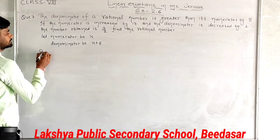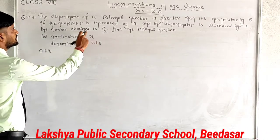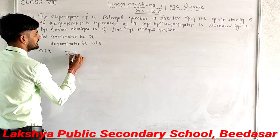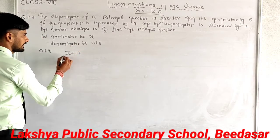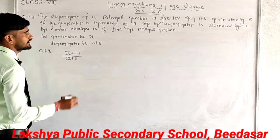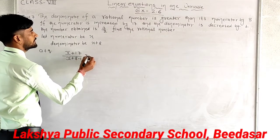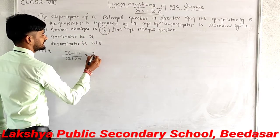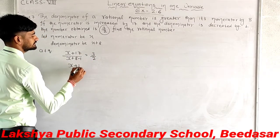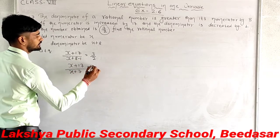According to the question: numerator becomes x plus 17, denominator was x plus 8, decreased by 1 becomes x plus 7. This equals 3 upon 2. So we have (x plus 17) upon (x plus 7) equals 3 upon 2.